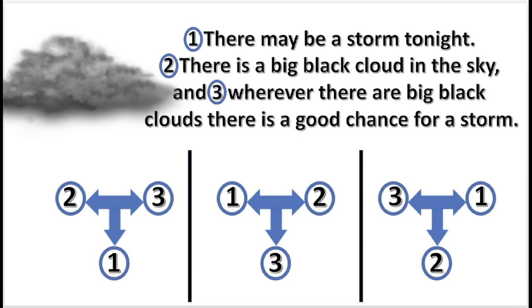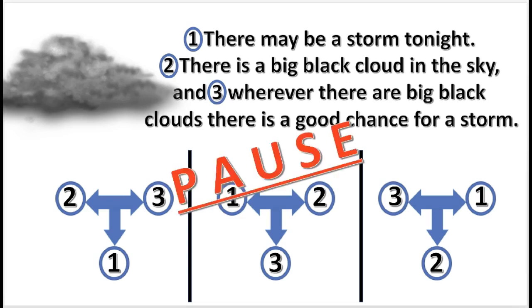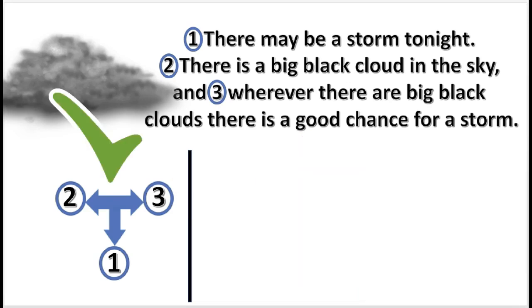Choose the correct sequence of numbers in the argument. Press pause. That is correct: 2 and 3 support 1 conjointly.